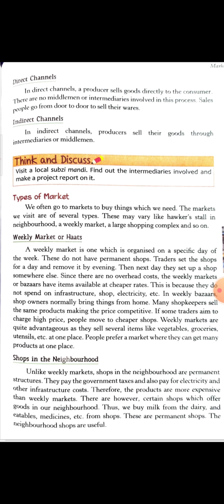Yahan par 1 level, 2 level, aur 3 level channels hote hain. 1 level kaise hoga: suppose producer hai, consumer hai, aur beech mein retailer hai — producer, then retailer, then consumer. Ya producer, then wholesaler, then consumer. Phir 2 level channel: producer, wholesaler, retailer, then consumer. Beech mein 2 middlemen hain — wholesaler aur retailer — so this is a 2 level channel.